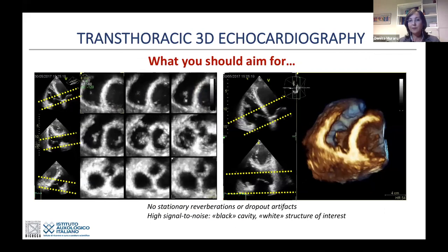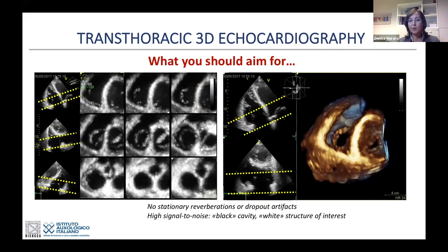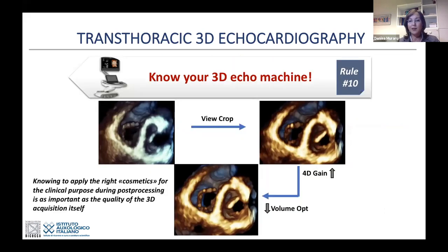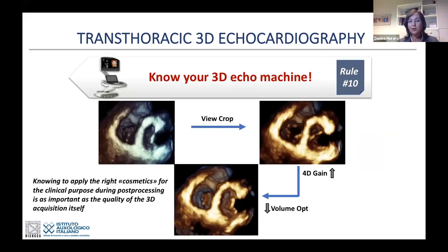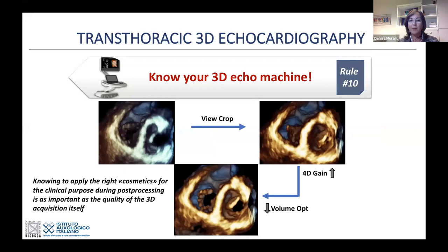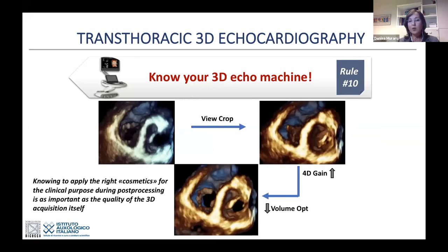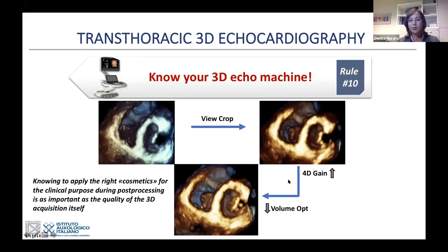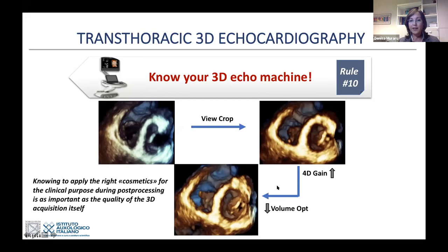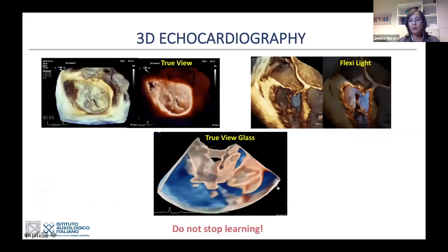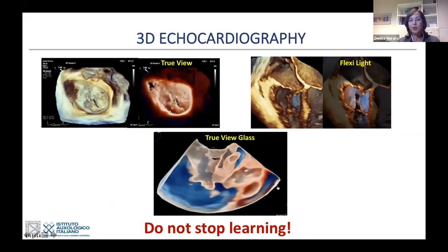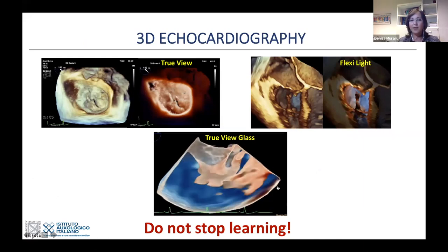A good acquisition should be black and white: black cavity, white structures, without artifacts or reverberations. Finally, know your 3D echo machine—learn your scanner in your lab. Start with one machine, because working on several scanners is more confusing. Small tricks will help you get beautiful images from the same dataset just by learning to control a few settings. And last advice: do not stop learning. There are new tools and new features every day in 3D echo—this is both the best and the challenge of 3D echo, as there is always something new to learn.